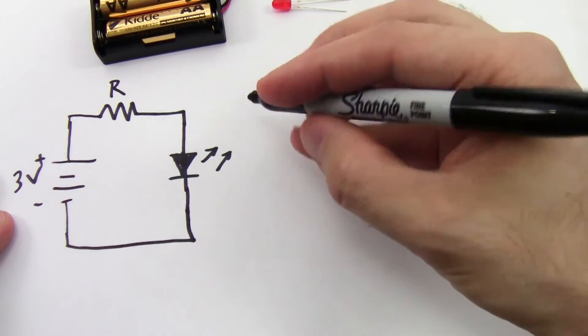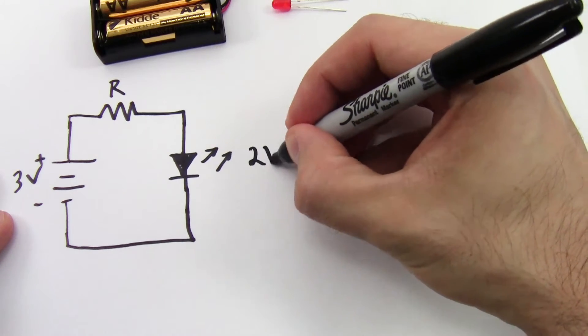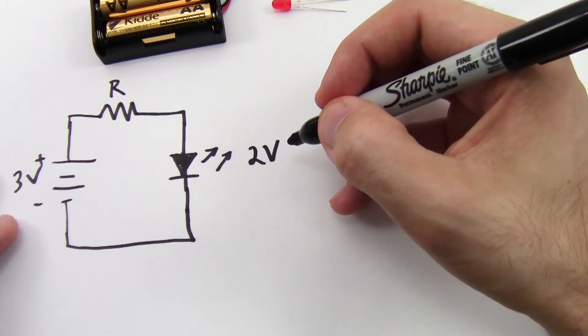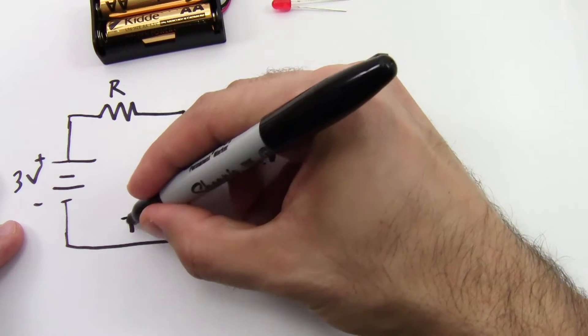So let's think about what else we know in this circuit. We know that in this case with my red LED, the voltage drop over the LED is going to be 2 volts. I also know that I want the current through the LED to be 20 milliamps.